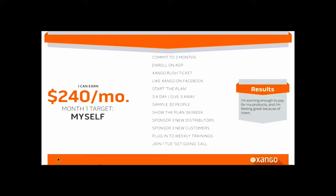Half as distributors and half as customers — that's how we get our $240. We focus on what we're doing the first month. We want to make a three-month commitment, enroll on ADP, and get a ticket to Zango Rush. Always get a ticket to the next big event right when they sign up — that's when enthusiasm is highest and they'll make whatever commitment. Zango Rush is the international convention in Las Vegas in September. Sell them a ticket right there when they sign up.